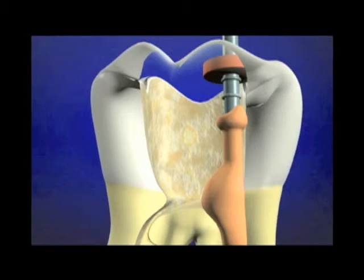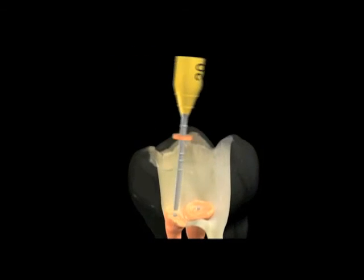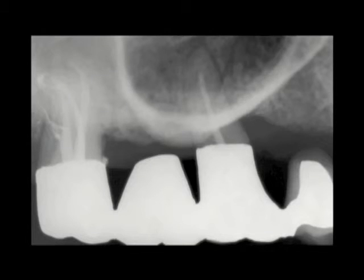With older plastic carriers, you could use ultrasonics, a heat carrier, or a bur to cut them off at the desired level. GuttaCore offers additional advantages: you can simply rock the handle buccal-lingually and the gutta percha core separates, and out comes the handle. If you have a narrow inter-occlusal space, use a small surgical-length round bur for line of sight, cutting at approximately the level of the orifice.